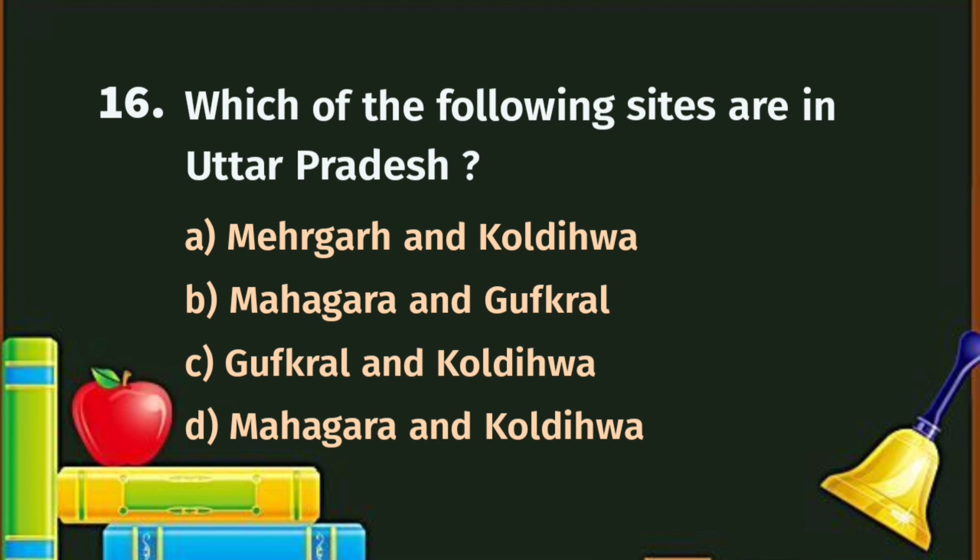Question number 16. Which of the following sites are in Uttar Pradesh? A. Mehargarh and Koldiwa, B. Mahagara and Gufkral, C. Gufkral and Koldiwa, D. Mahagara and Koldiwa.